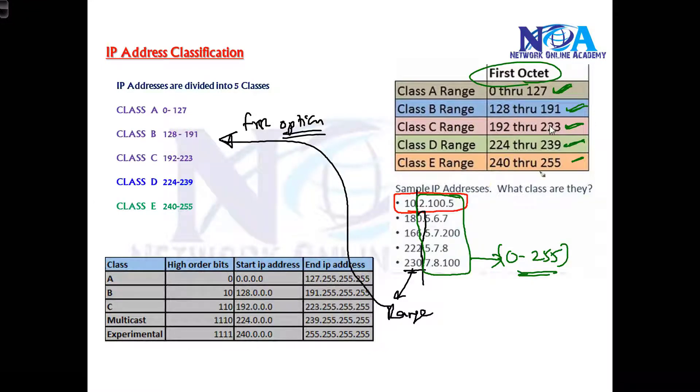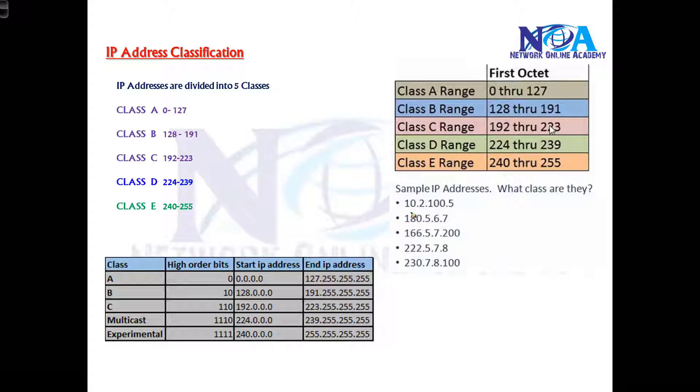So here, if I go with this example, if I go with the first example here, the first portion is 10. So 10 comes in the range of Class A, so I'll say this is my Class A address. Likewise, if I go with the second example, I just see only the first portion. So don't see the other portions. 180 comes in the range of Class B, so this is your Class B address.